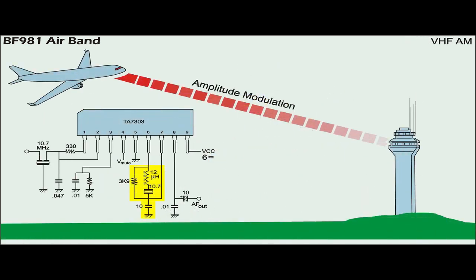Because aircraft communicate with air traffic controllers in AM mode, the TA7303 has to be modified such that its frequency detection capability is compromised. To do this, all discriminator components are removed from pin 6 and 7, leaving only the 3.9K resistor.